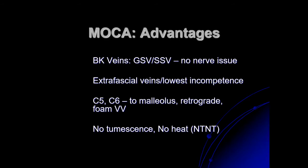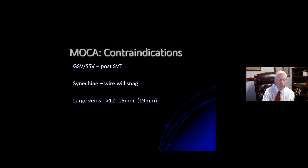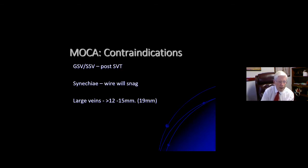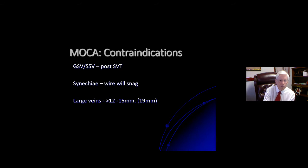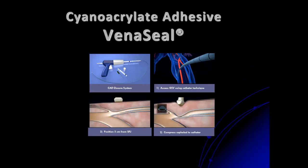A contraindication for MOCA is prior superficial venous thrombosis — the rotating wire will snag on synechiae and you must shut the machine off immediately or an unintentional stripping procedure without anesthesia will result. Large veins are probably not best treated with MOCA. For cyanoacrylate adhesive, the VenaSeal procedure involves inserting a catheter, compressing the saphenofemoral junction, and depositing droplets of adhesive. For a 35 to 40 cm segment of saphenous vein, approximately 1.2 to 1.6 mL of adhesive is used — very small quantities. The adhesive is very viscous, making embolization extremely unlikely, particularly with the first injection held for three minutes.